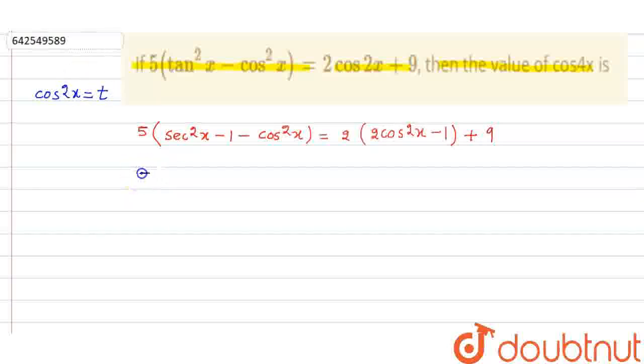So this thing is 5 into 1 upon t minus 1 minus t. That is equal to 4t minus 2 plus 9. That is equal to plus 7.